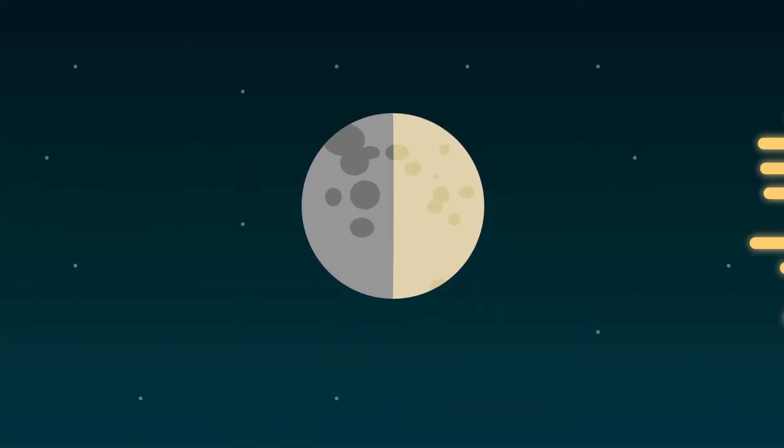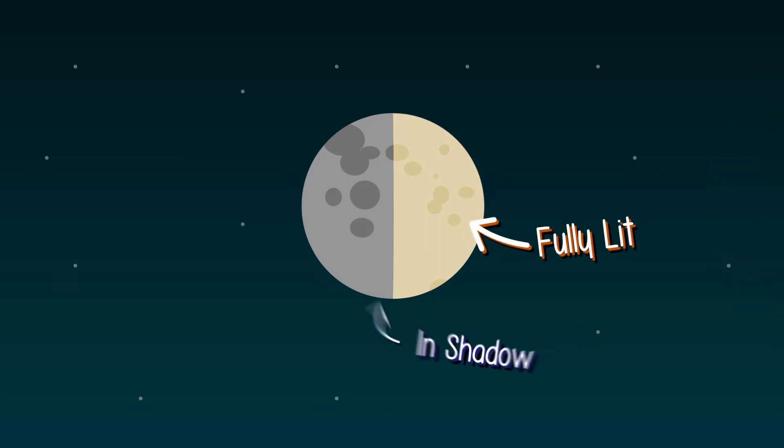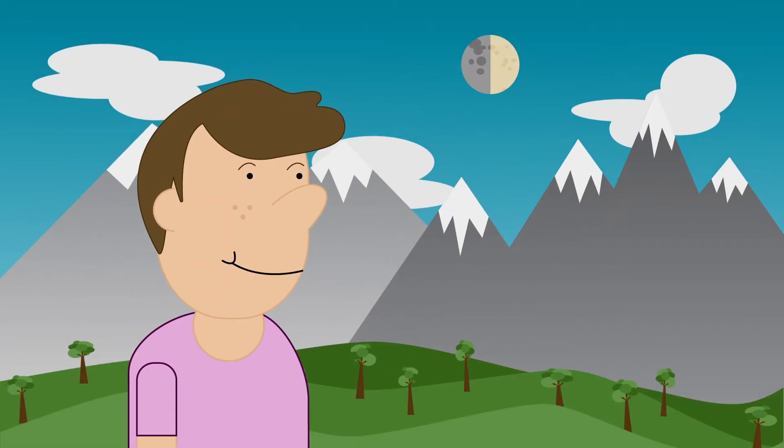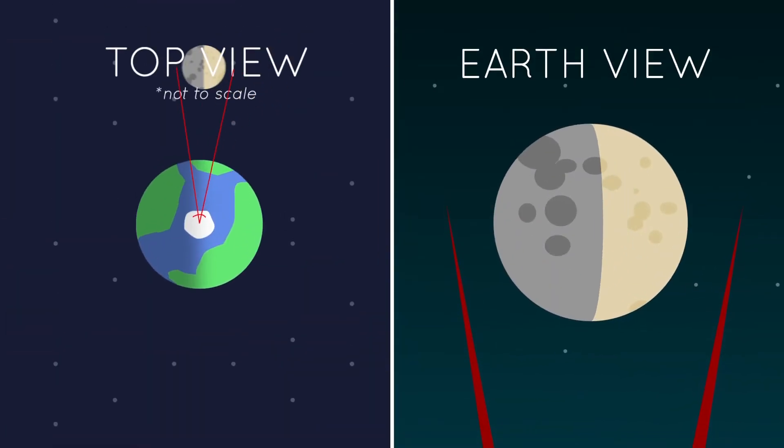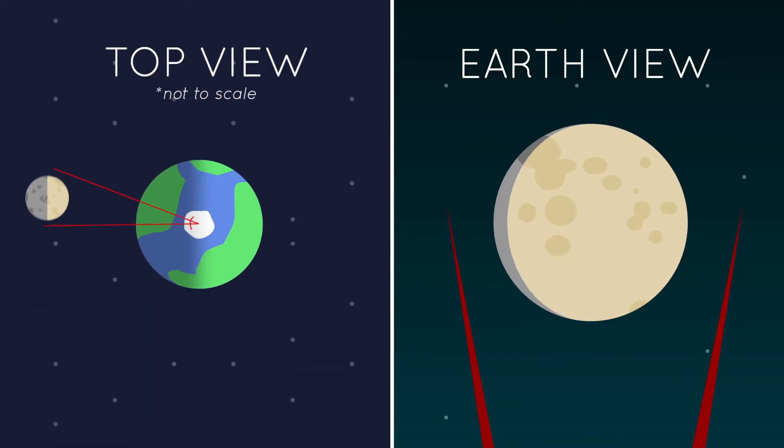Even though it's almost always being hit by the same amount of light, we can only see part of it because we're stuck down here on Earth. Gah, stupid Earth. Mountains. And since the moon is orbiting around us, our perspective of it changes.